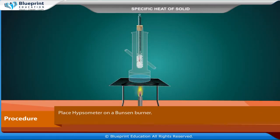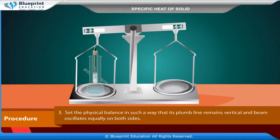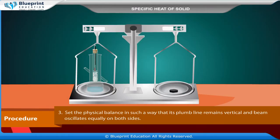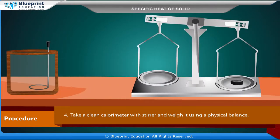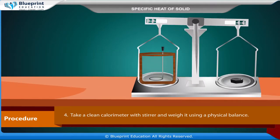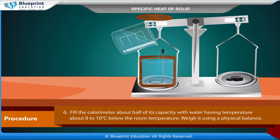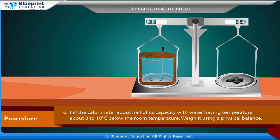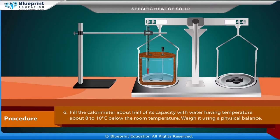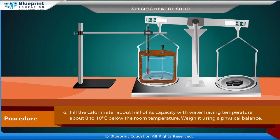Place the hypsometer on a Bunsen burner. Set the physical balance so that its plumb line remains vertical and the beam oscillates equally on both sides. Take a clean calorimeter with stirrer and weigh it using a physical balance. Put a lid over the calorimeter and weigh it. Fill the calorimeter about half its capacity with water having temperature about 8 to 10 degrees Celsius below room temperature, then weigh it using a physical balance.